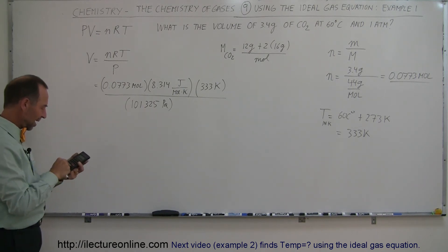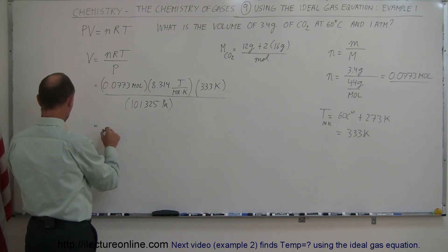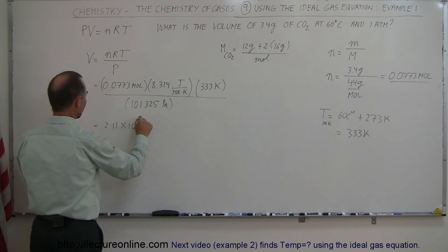So I take the number of moles, times 8.314, times 333, divided by 101,325, and I get a volume of 2.11 times 10 to minus 3 cubic meters.